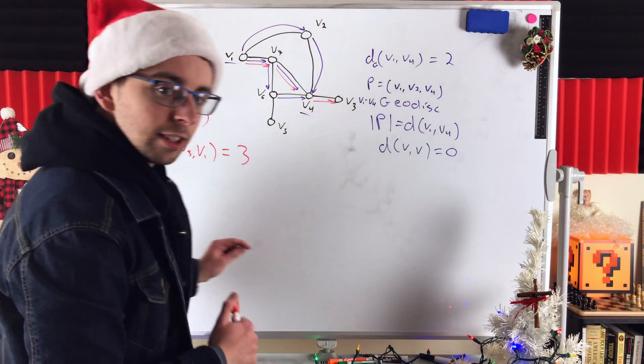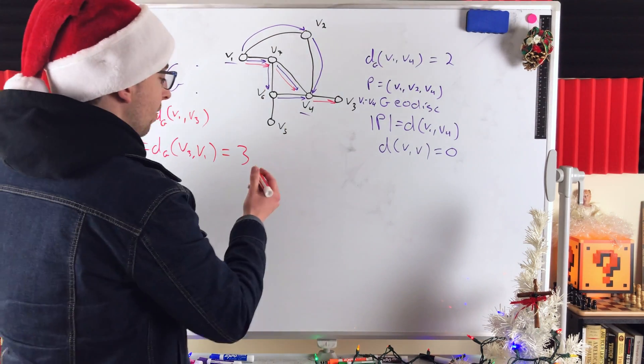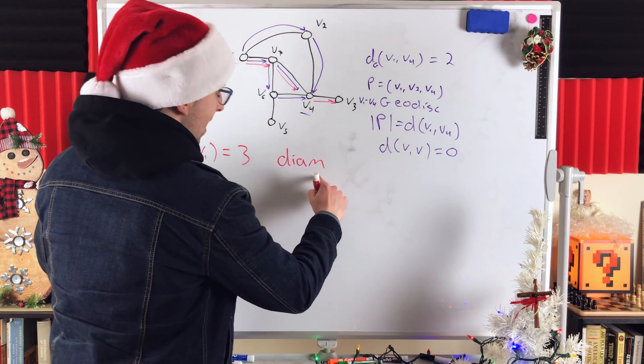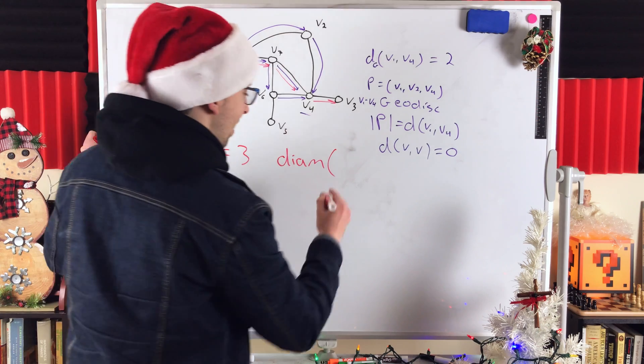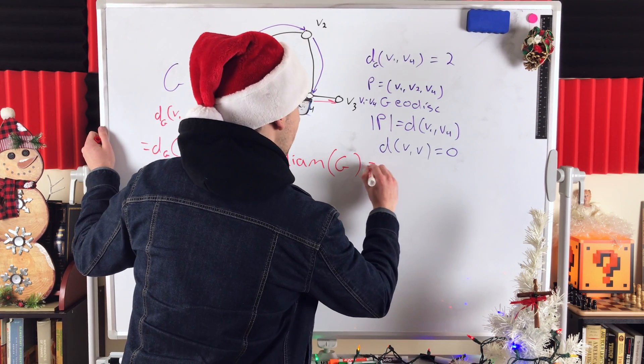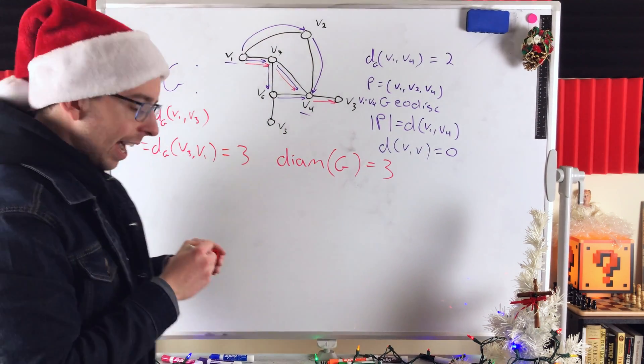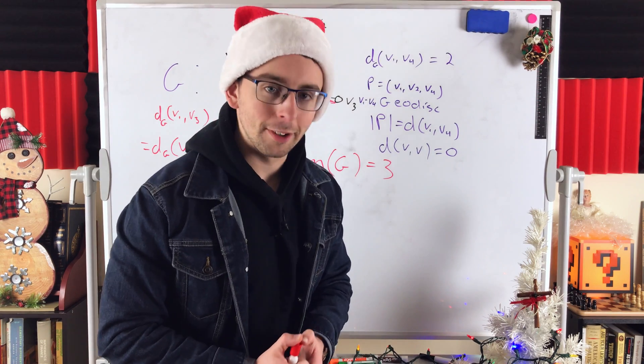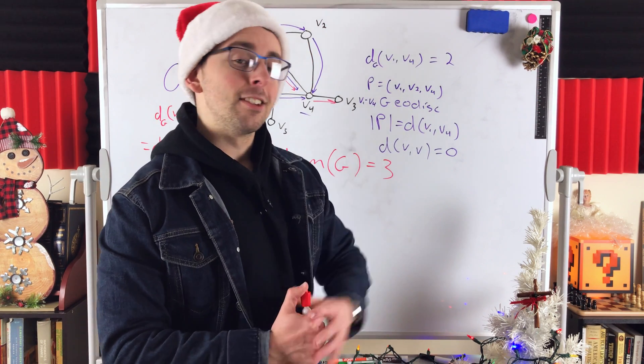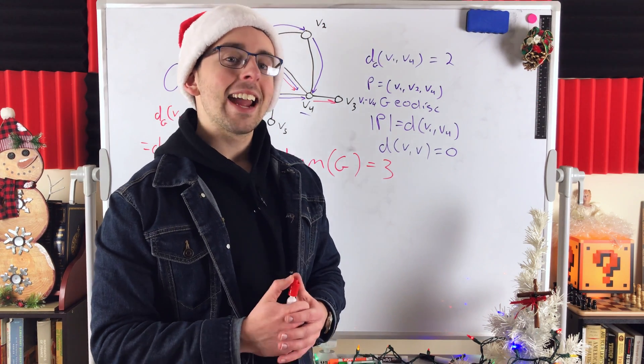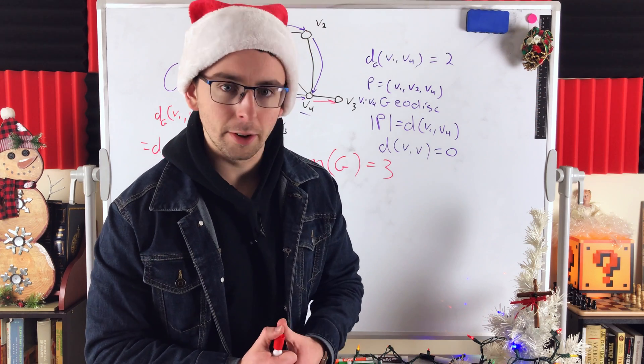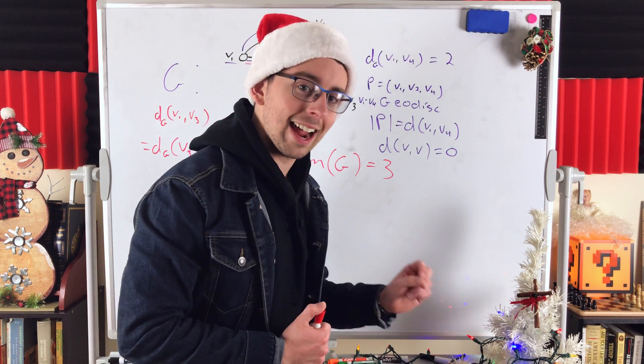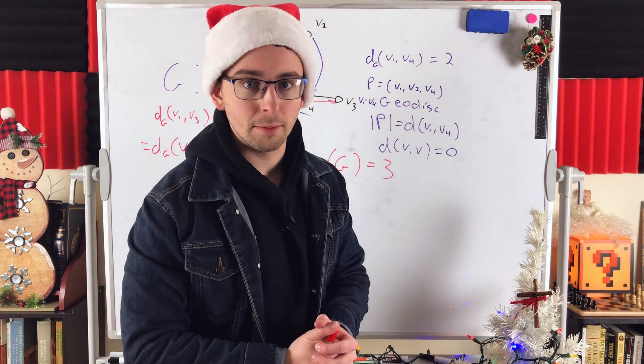The greatest distance between any two vertices in a graph is called the diameter of the graph. So, we could write that diam for diameter, sorry about that loud train out there, the diameter of G is equal to 3. Again, the diameter of a graph is the greatest distance between any two vertices in the graph. The distance between any two vertices is the length of a shortest path that connects the vertices, and a path connecting two vertices of shortest length is a geodesic between those two vertices.